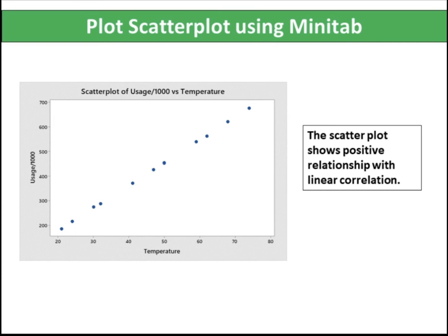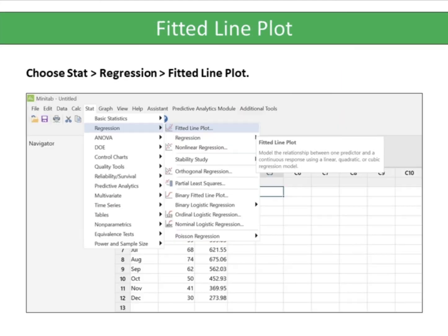A Scatter Plot is a type of data visualization that shows the relationship between different variables. Each data point looks scattered around the graph, giving this type of data visualization its name. Scatter Diagrams for regression analysis are constructed with the independent variable X on the horizontal axis and the dependent variable Y on the vertical axis. The Scatter Diagram enables us to observe the data graphically and draw preliminary conclusions about the possible relationship between the variables.